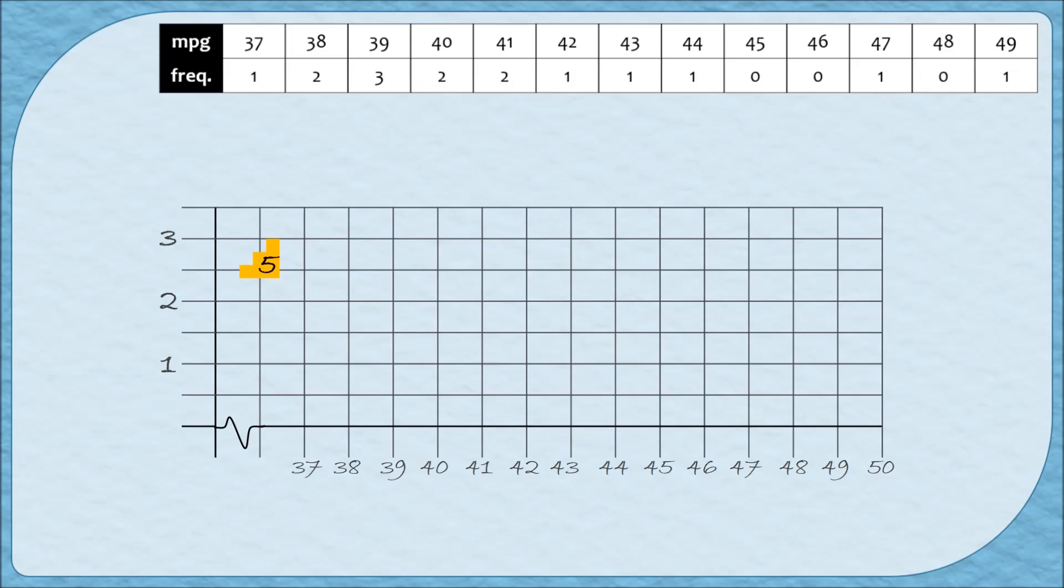On to step five. Step five is when we draw the bars of the histogram. The way that we're going to do this is very similar to the bar graph, but there are a couple of alterations we need to make. So we're going to begin by looking at our first category where the mileage was 37 and it had a frequency of one.